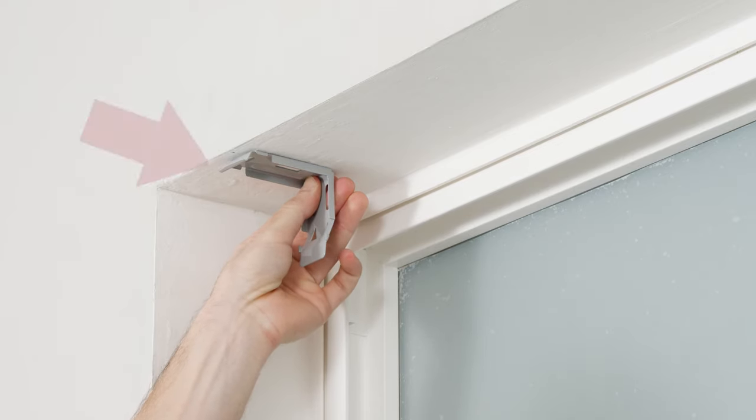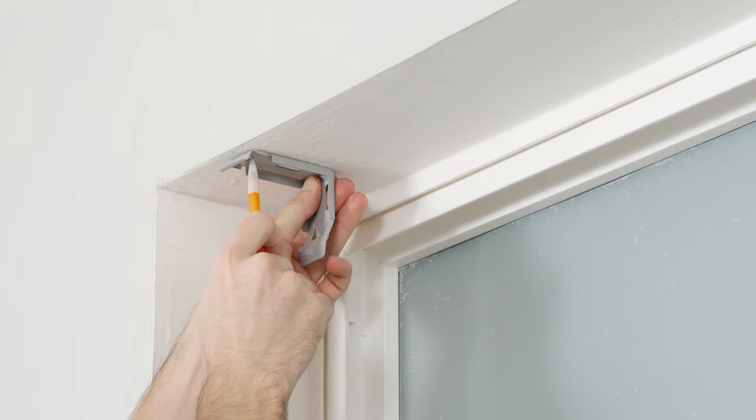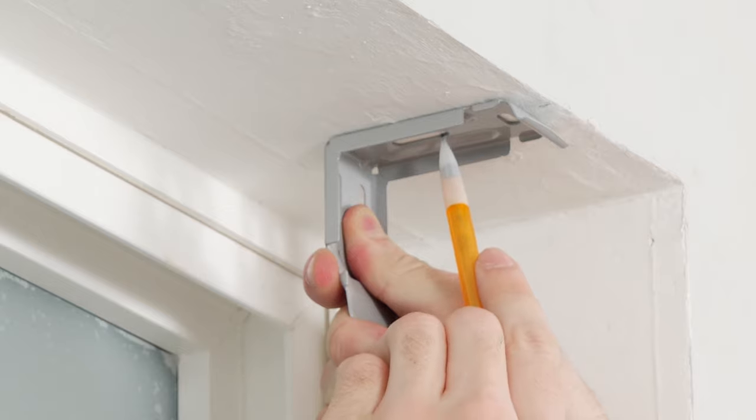Also, you'll want to make sure the front edge of your brackets are flush with the window frame. Place the brackets in the previously marked location and use a pen or pencil to mark where the two screws will go.